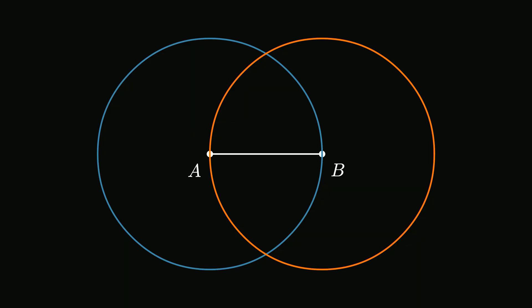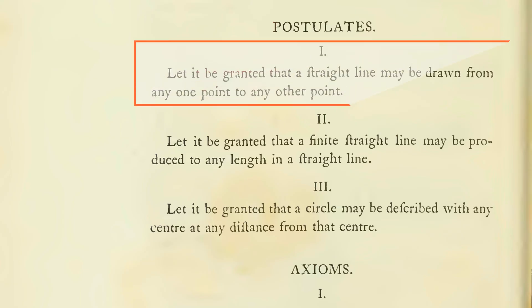Next, Euclid argues that the circles intersect at a point C. This is crucial because it helps form the triangle's vertex. His next step is to connect points A and B with C to form a triangle. According to postulate 1, any two points can be connected by a straight line, so this is perfectly acceptable.